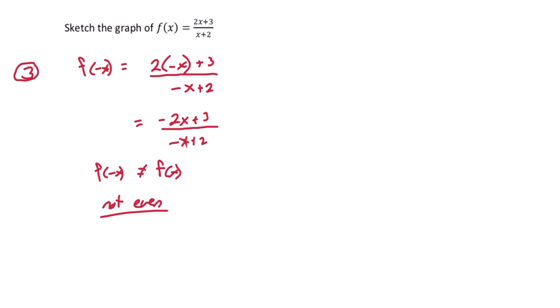Next, we'll check to see if it is odd. So we'll take this function, f of negative x, and factor out a negative 1. I'm going to pull it out of the numerator. And we can see that this is not negative f of x. So f of negative x is not negative f of x, which means it's not odd. That tells us we do not have symmetry about the origin. So this step doesn't help us in our graphing process.